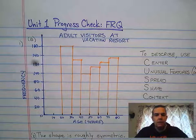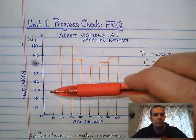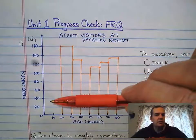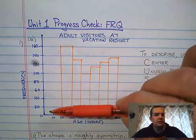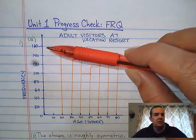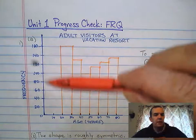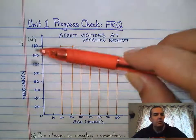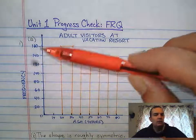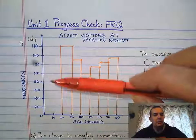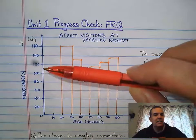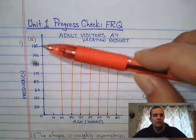The first thing I want to notice when we create a histogram is the vertical axis. The vertical axis is scaled evenly, beginning at zero, going up to 160, which is the maximum number given in the problem, and I decided to count by 20s. You could count by 10s or by 40s. The only thing you need to make sure is that every one of these spaces is even going up the vertical axis.